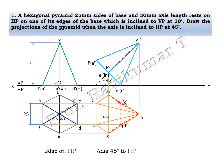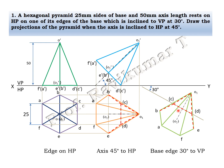Now the third position. As given in the problem, 30 degrees to VP means the edge of the base is inclined to VP at 30 degrees. The resting edge — C and D is the resting edge, because the resting edge is always towards the right-hand side. This resting edge is inclined to VP at 30 degrees. Place it, then do the naming.